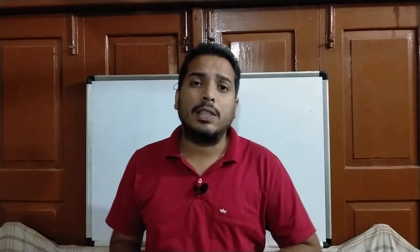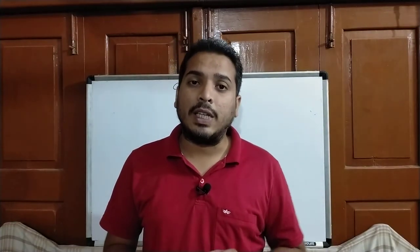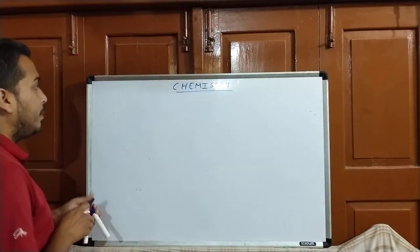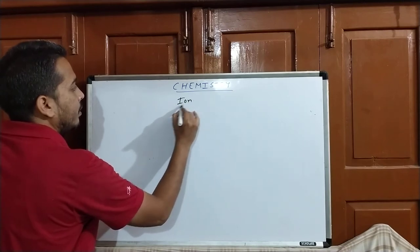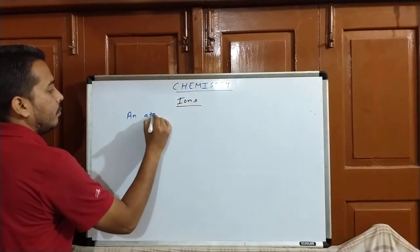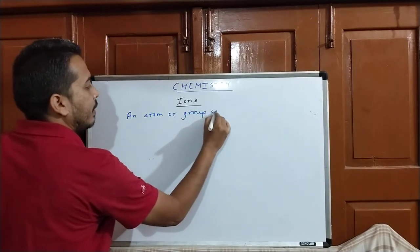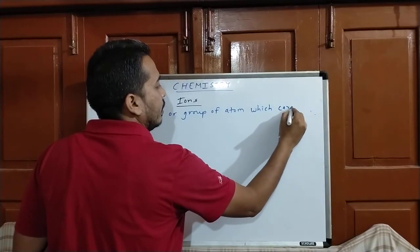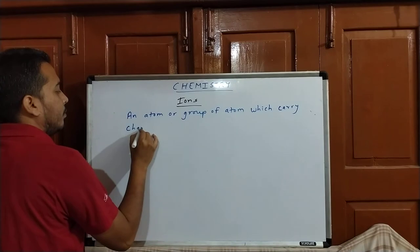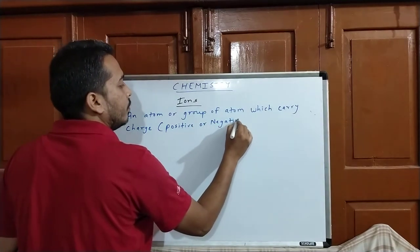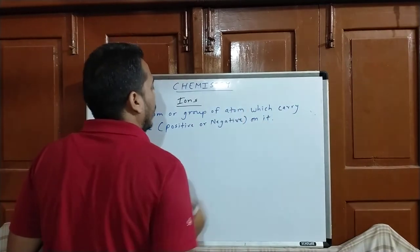Now we will see about ions. Ions are an atom or a group of atoms which carry any charge, positive or negative. We have to write the definition of ions. An atom or group of atoms which carry charge — positive or negative — is called an ion.